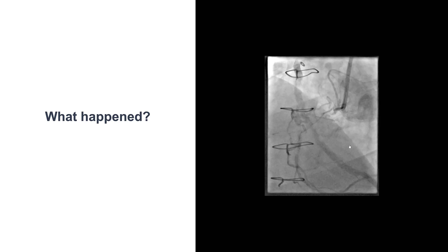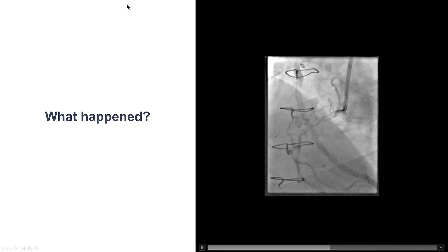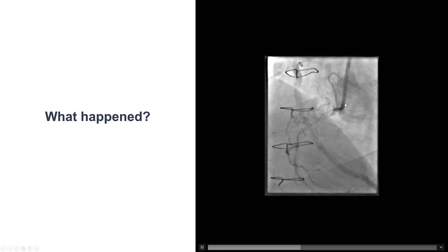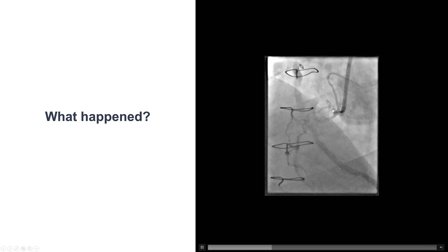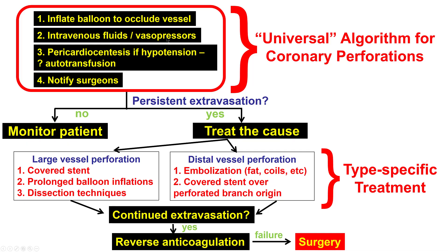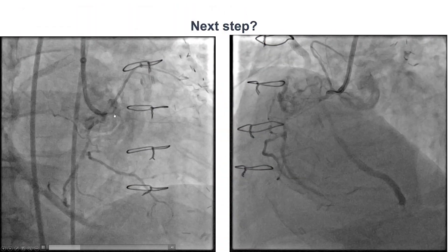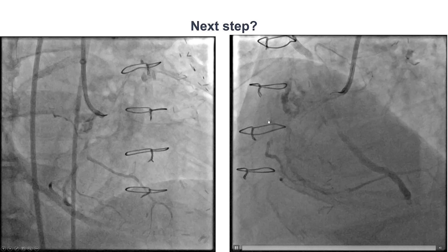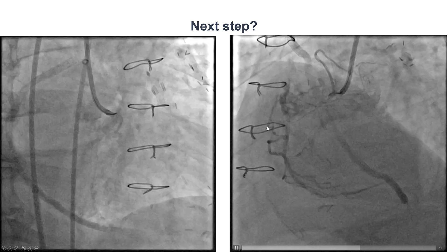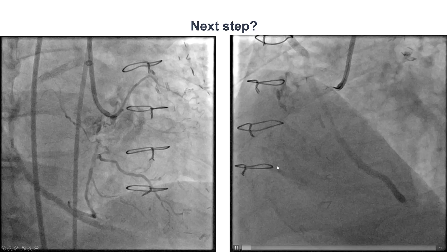After all this, we decided to take a picture antegrade and to our surprise, we saw that there was actually a perforation in the mid-RCA. It is unclear when this happened. During the retrograde attempts, we lost the position of the wire in the CTO vessel, and now we have a perforation of the right coronary artery. The first step is to inflate a balloon, but we didn't have much space in the proximal RCA, and moreover, inflating a balloon might cause significant ischemia of the mid and distal right coronary artery given the collateral supply through the ipsilateral epicardial.